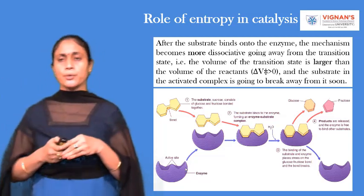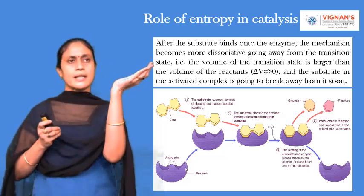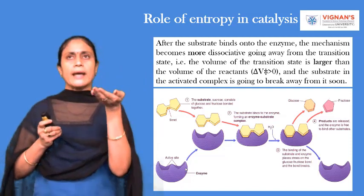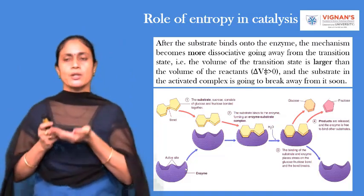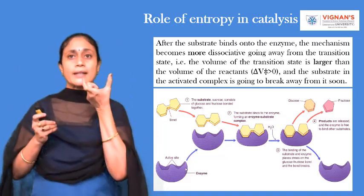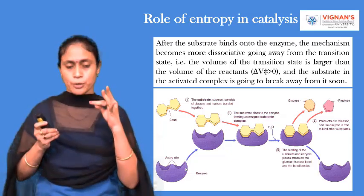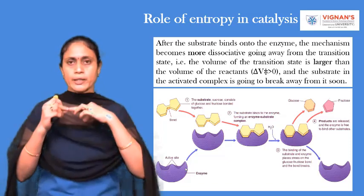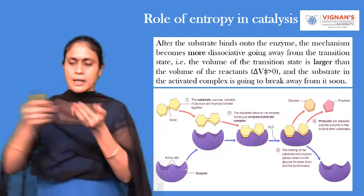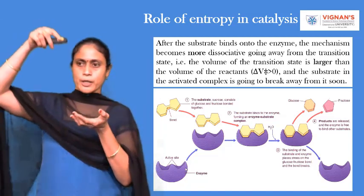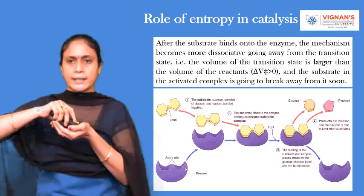I'll explain with a small example. Consider an enzyme — consider this enzyme as sucrase. From the name, you can analyze that sucrase is an enzyme which acts upon the substrate sucrose. Sucrose is a disaccharide containing two monosaccharide units: one is glucose and another one is fructose. These two monomers are linked by a bond to form the sucrose molecule. This sucrose molecule comes and binds to the active site of the enzyme sucrase.